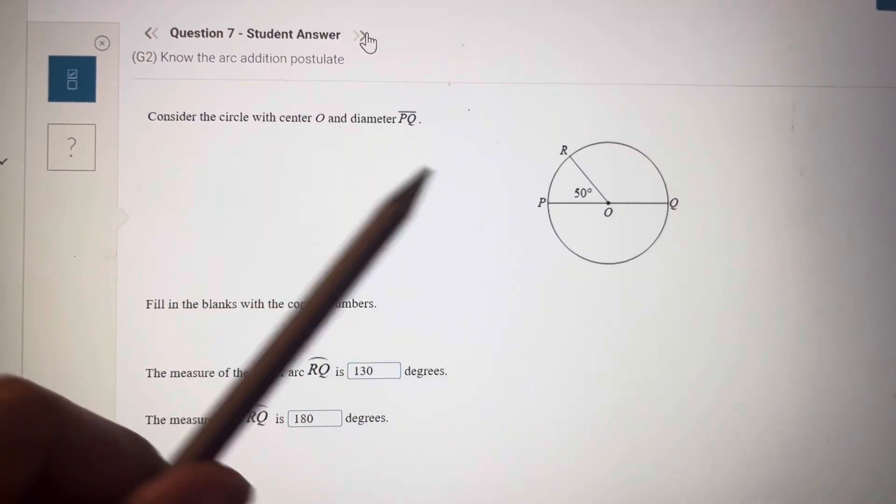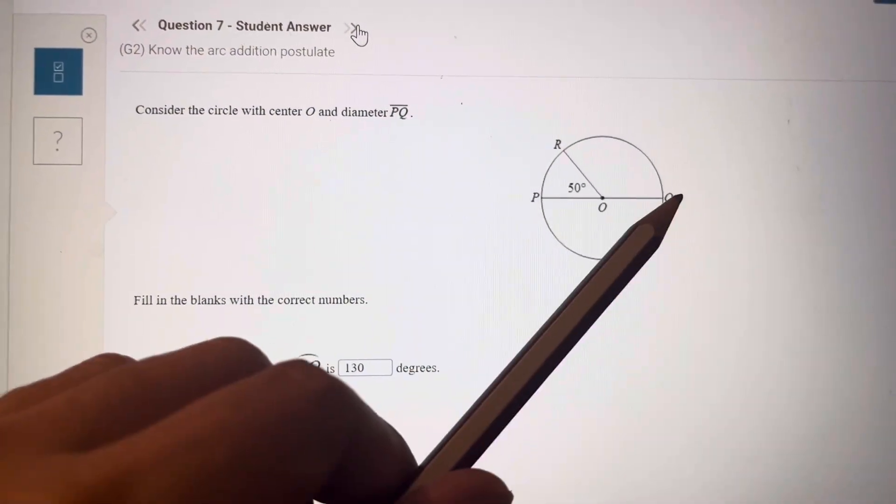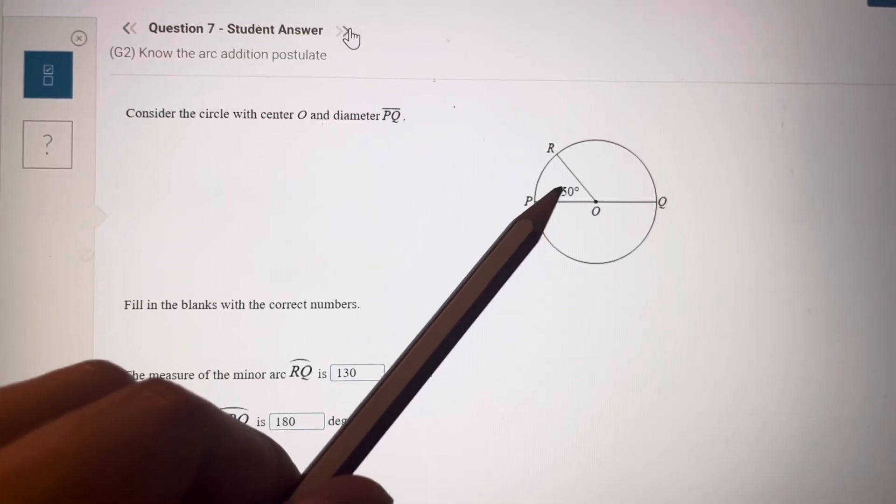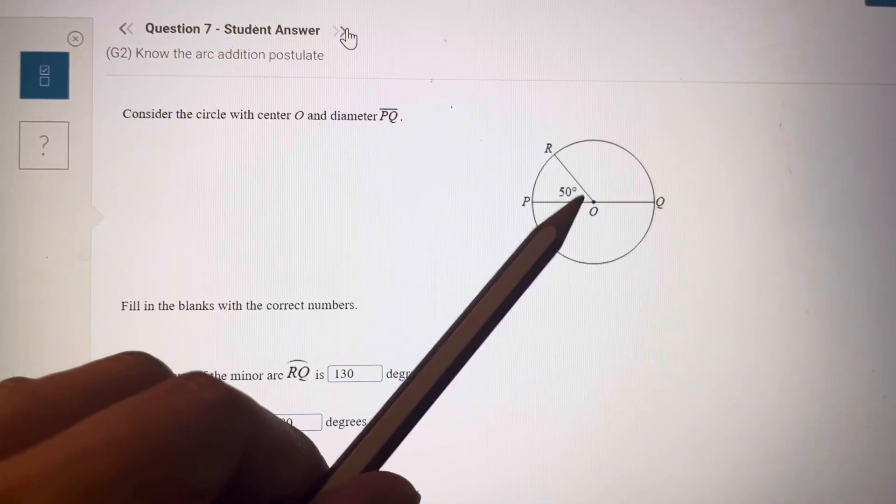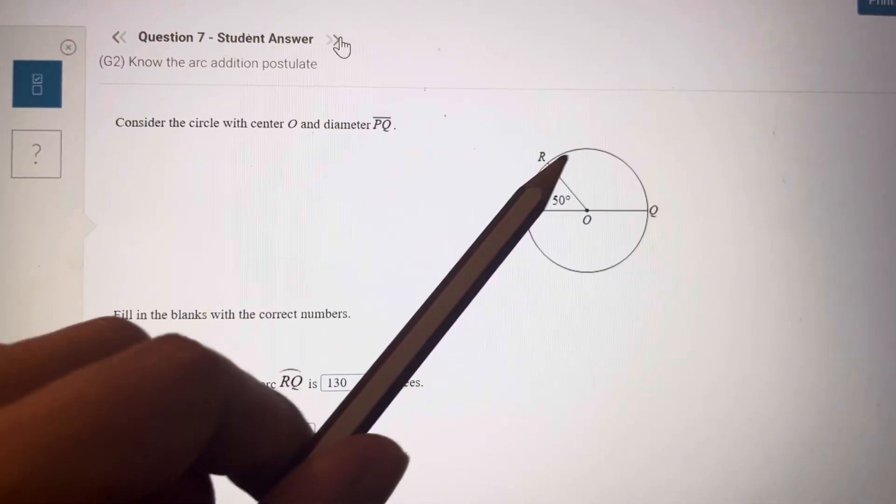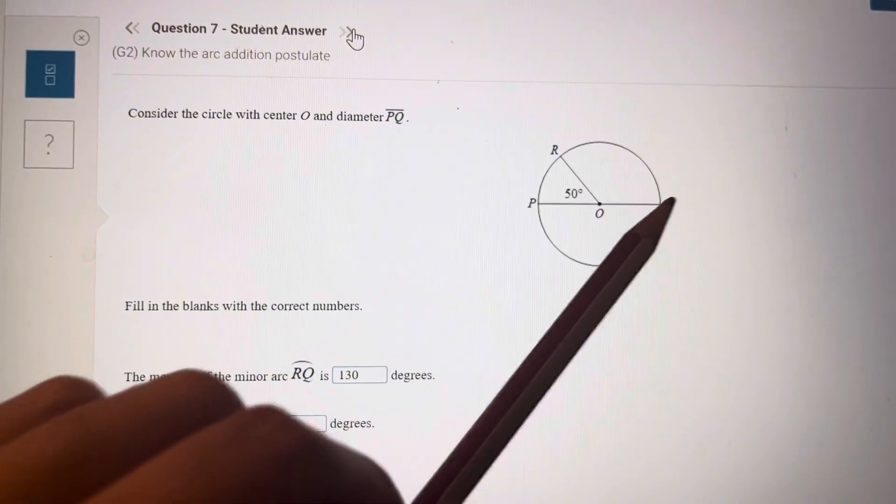He's giving you that PQ is a diameter. He wants RQ. PQ is a diameter, that means this is half the circle, 180. 180 minus, this is central angle, so this arc is 50. 180 minus 50, so this is 130. So RQ is 130.